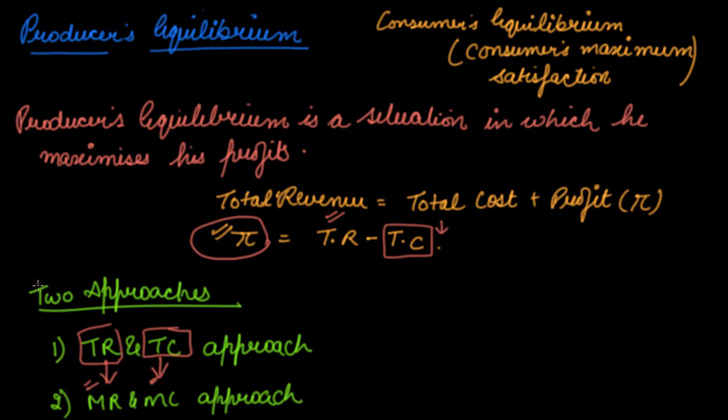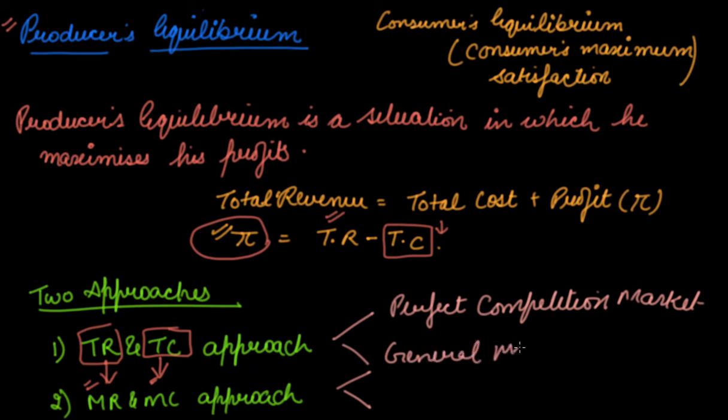So these are the two approaches through which we will find out the producer's equilibrium. Now again, we will find out these two approaches in two different conditions. Number one is perfect market, perfect competition market. And the second one is general market, which means your monopoly, oligopoly, monopolistic. And the same goes with MR and MC - your perfect competition and your general market. So in this we will actually do four ways.